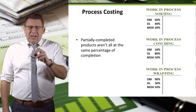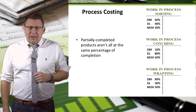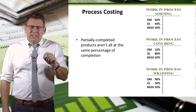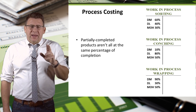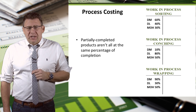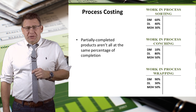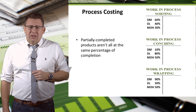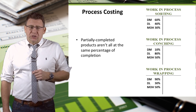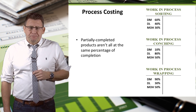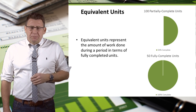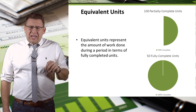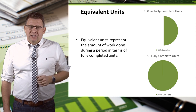And let's add a layer of difficulty to that. We don't easily know the cost of a product that is 81% complete for direct materials, but only 58% complete for conversion costs. So in order to deal with this complexity, I want to introduce the concept of equivalent units.